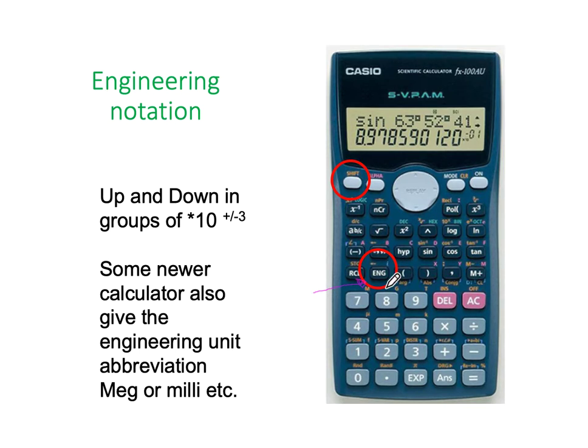If you press it again, it will just go up a scale. Press it again, it will go up another 3. By continually pressing the engineering button, you can go simply times 10 to the 3. Then it will go up to times 10 to the 6. Press it again, it will go times 10 to the 9. Press it again, it will go times 10 to the 12.